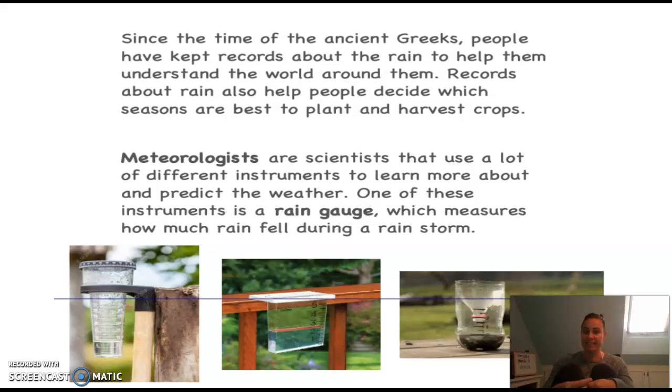Meteorologists are scientists that use a lot of different instruments to learn more about and predict the weather. Let me go over some important words there. Meteorologists are scientists that study weather. They use different instruments—we know that instruments are tools—to learn more about weather, to understand how weather is happening, and to predict the weather. To predict means to think and believe that something's going to happen, to say what you think will happen next without being able to actually be in the future.